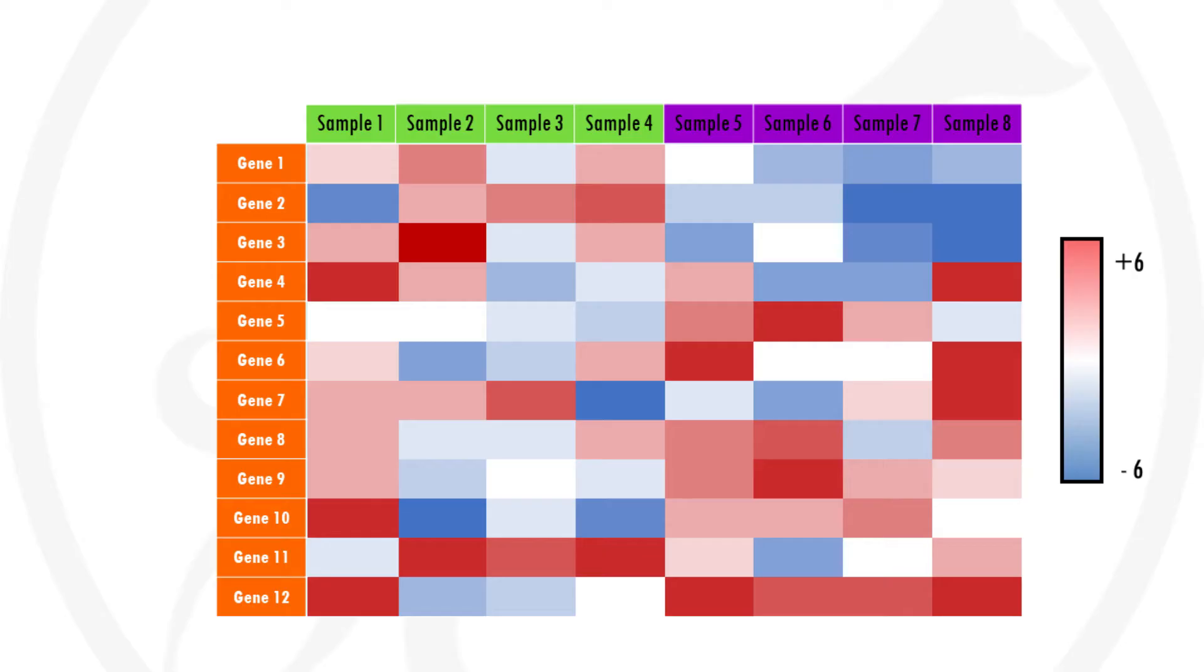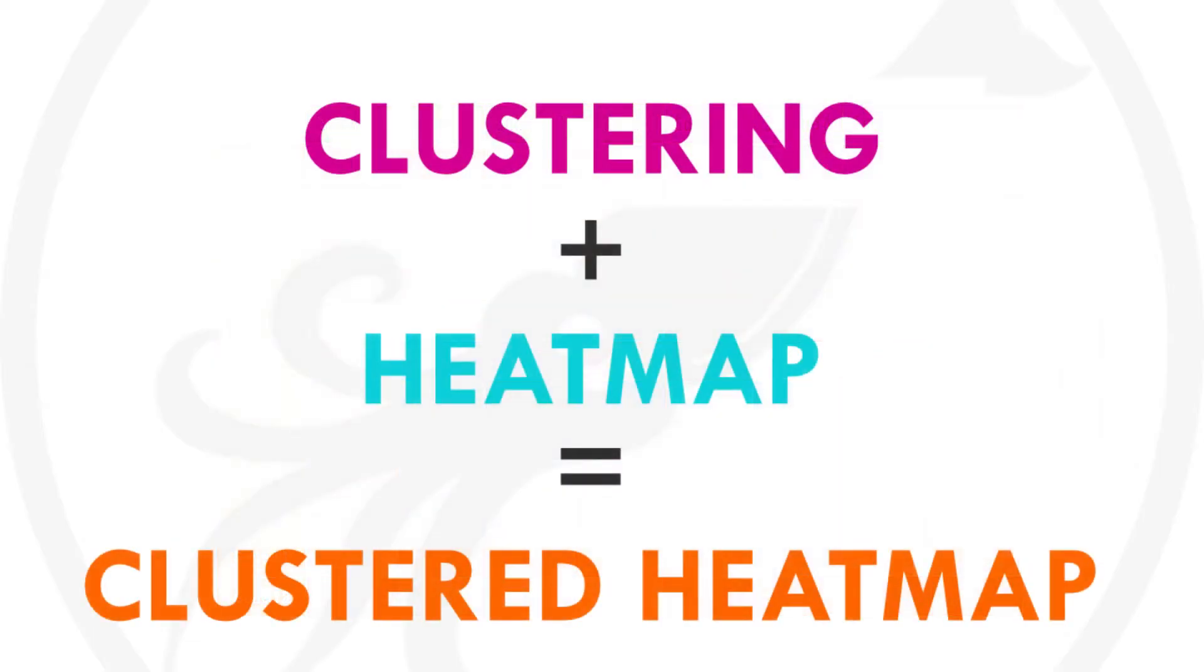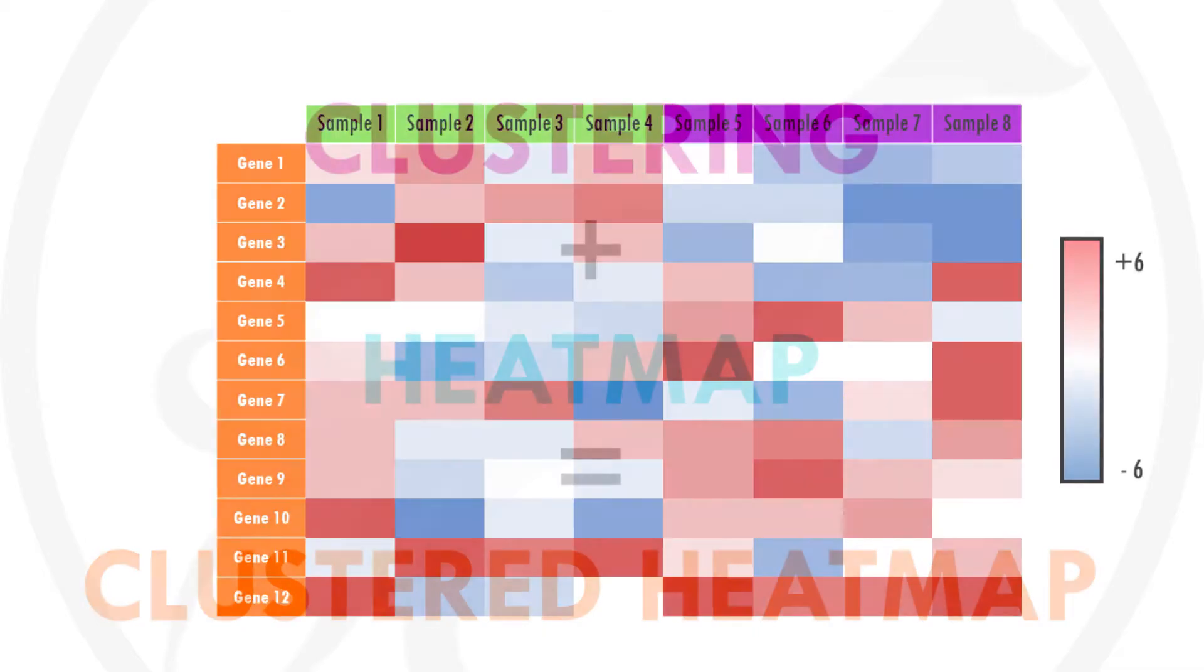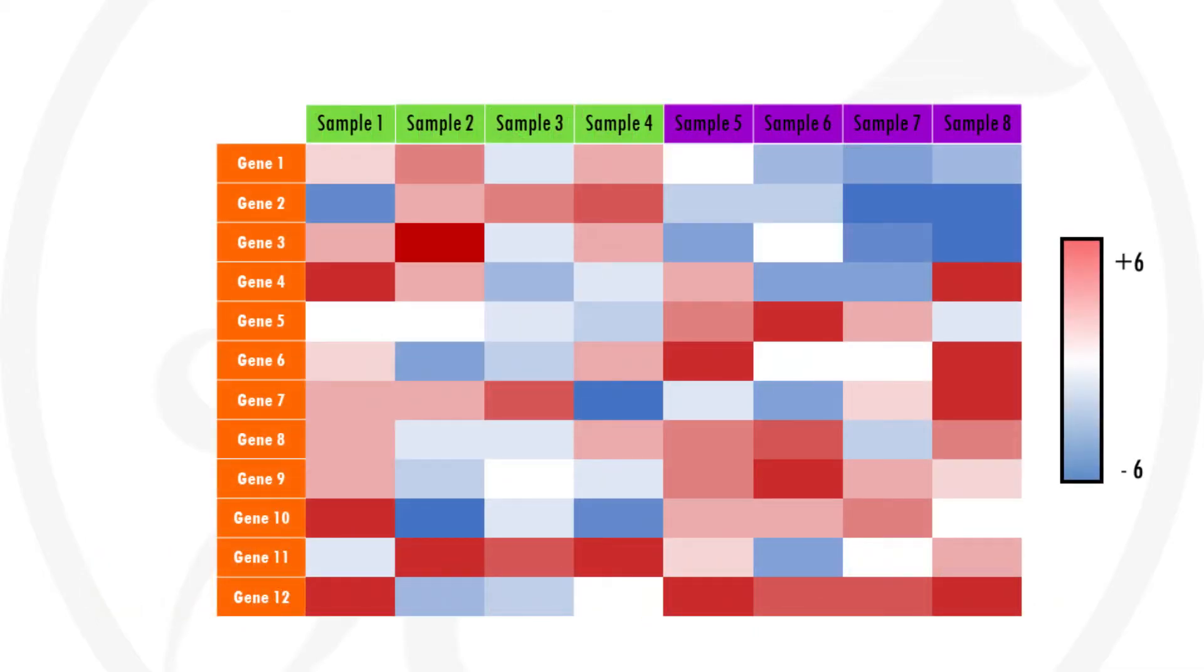This way we can easily visualize which genes are mostly up-regulated or down-regulated across samples. But how can we see patterns with so many colored tiles? The answer is to cluster the tiles. This involves a meaningful reordering of the rows and columns. And this is how we get a clustered heatmap.